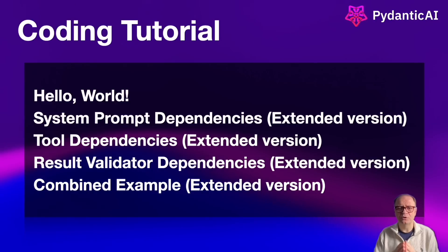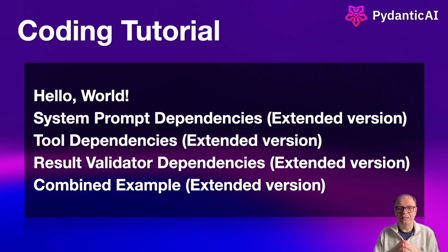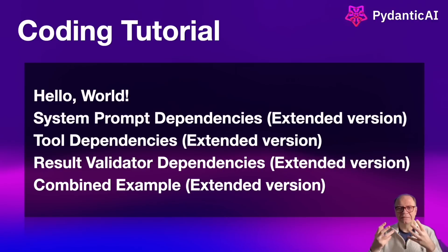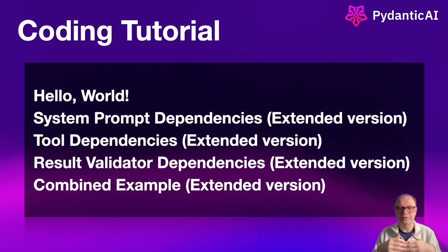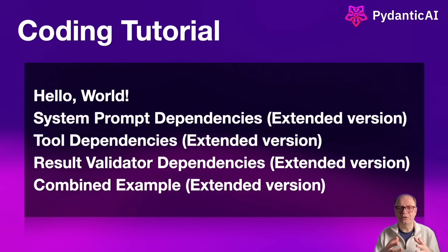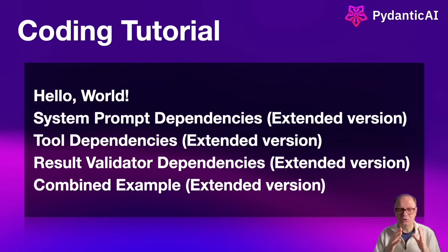Next, we're going to cover tool dependencies using a bank loan application agent system. We'll use an LLM call inside a tool — the tool's job will be to qualify an applicant based on their data, including salary and financial data, and provide a risk profile so that the loan origination agent has the information necessary to approve the application.